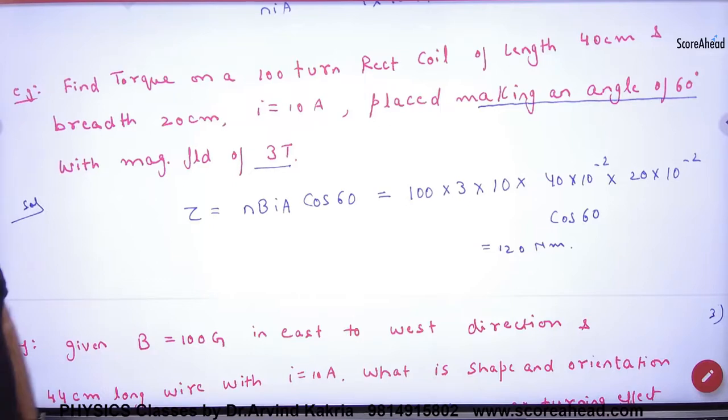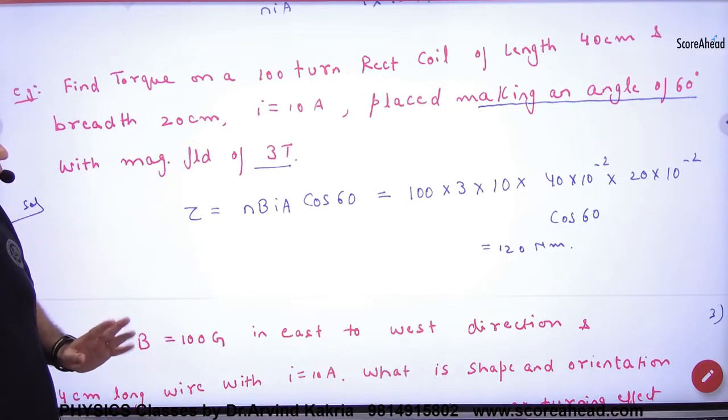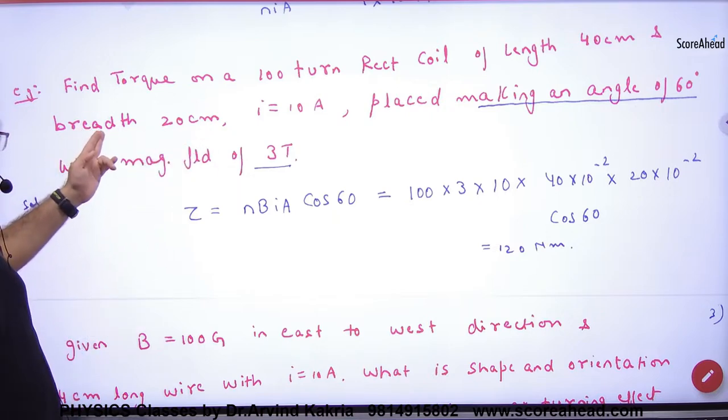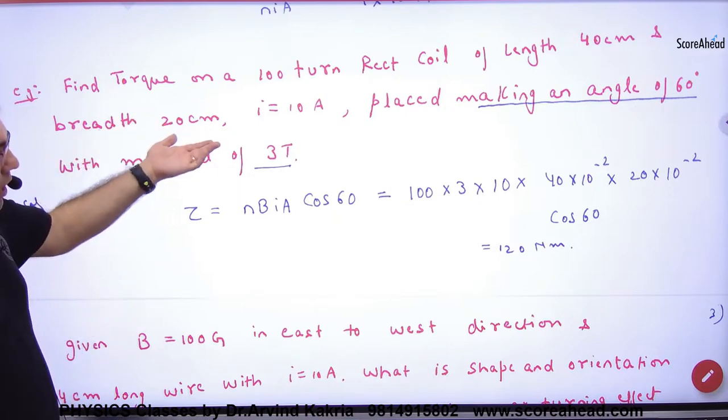Find torque on 100 turns rectangular coil. Number of turns is 100, length and breadth are given, so automatically area will go. Current is known.